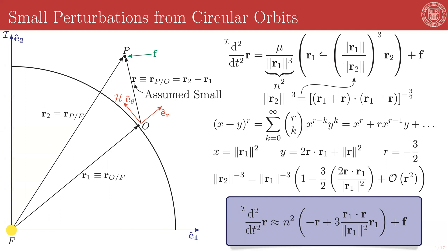Notice that our original expression was a function of R1 and R2, but in our final linearized version we have it as a function of R and R1. This is important because it means we don't need to track the actual separation of P with respect to F — we only track R and R1. R1 is constant in magnitude; it is just changing in direction, always equal to the radius of the circular reference orbit.